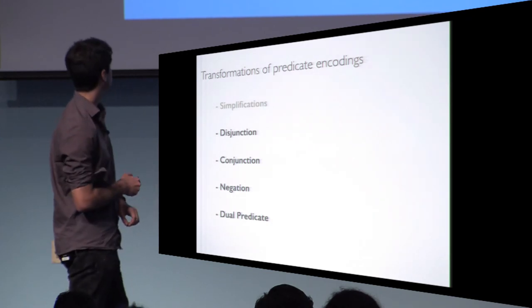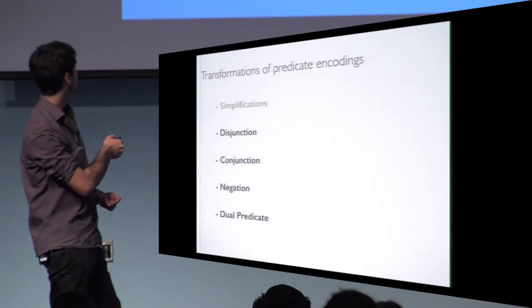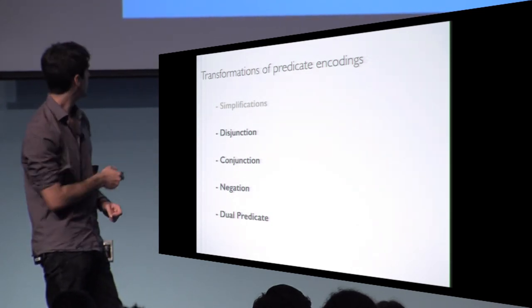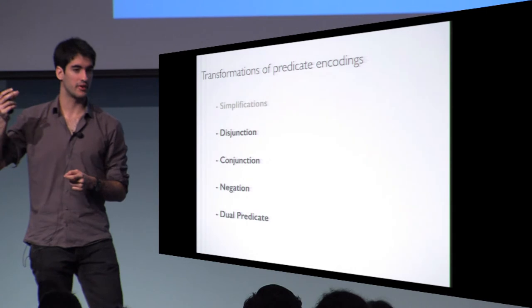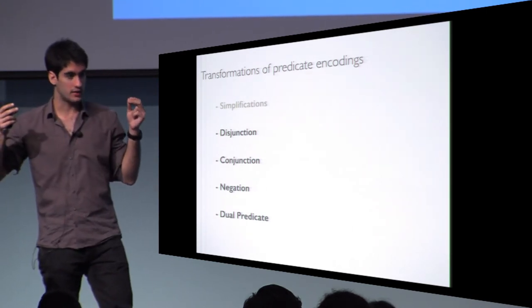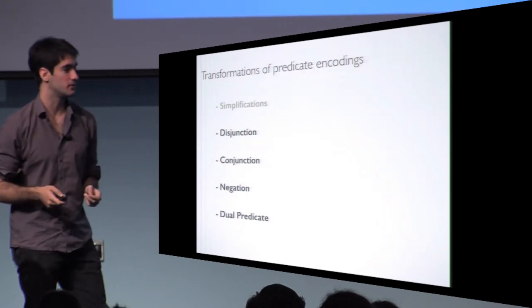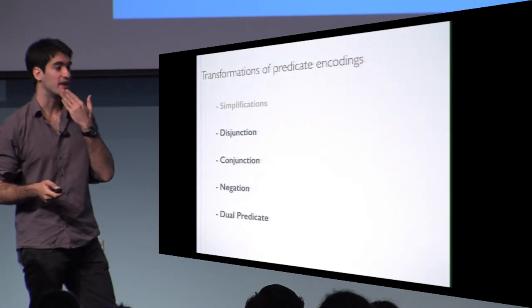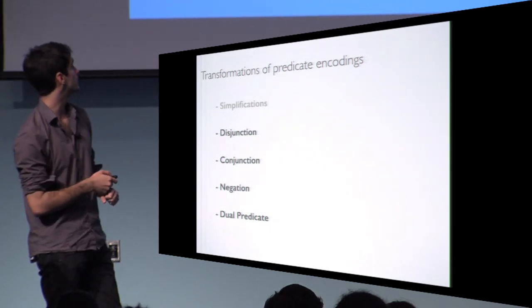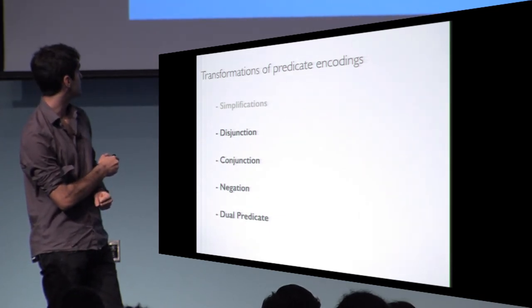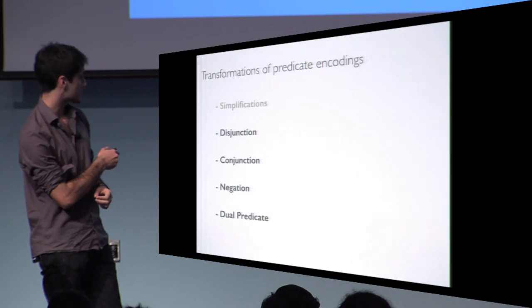We also provide generic transformations for predicate encodings. For conjunction and dual predicate — where dual swaps the roles of X and Y, making the difference between secret-key-policy and ciphertext-policy ABE — Attrapadung already showed some constructions in the pair encodings framework. Our constructions are slightly more efficient.